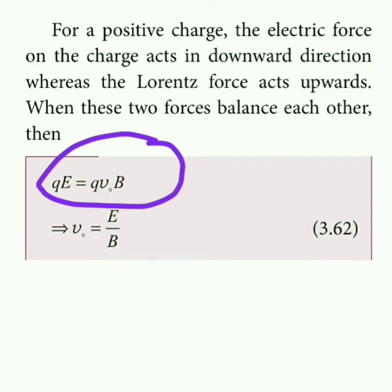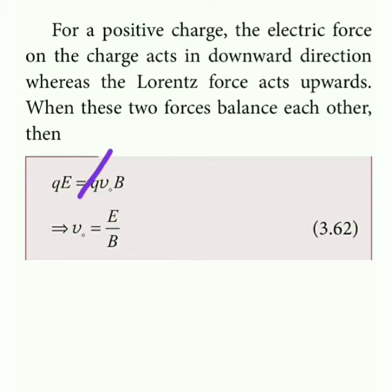One q cancels from both sides, giving us v₀ equals E divided by B. This is the velocity selector equation — the velocity v₀ can be calculated from the ratio of electric field to magnetic field.